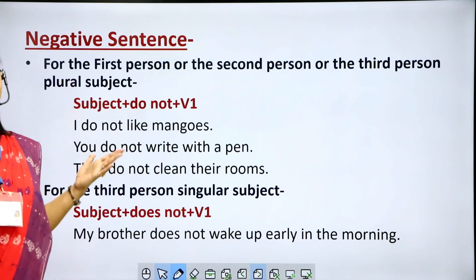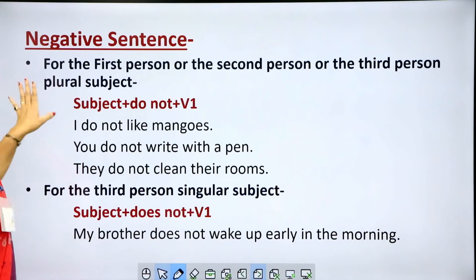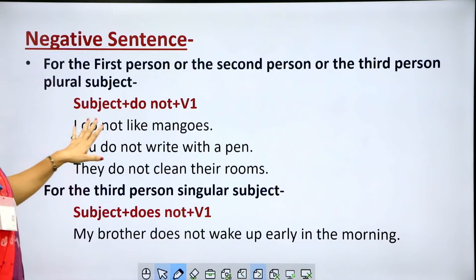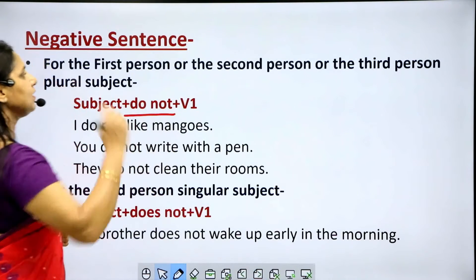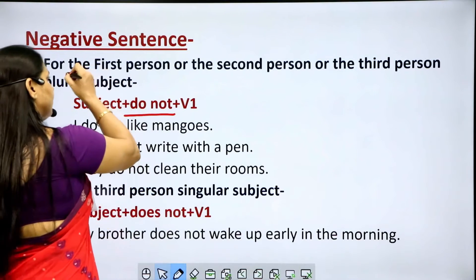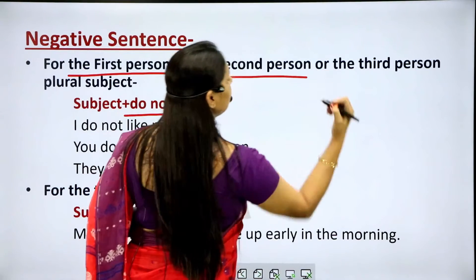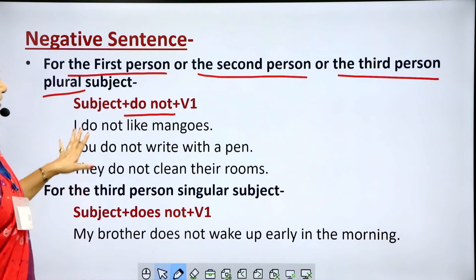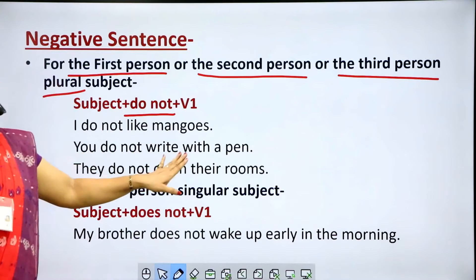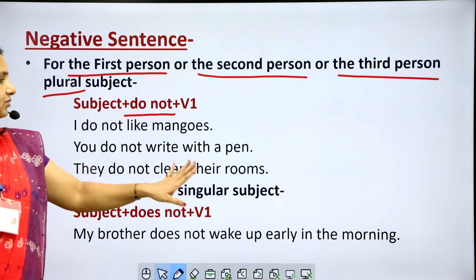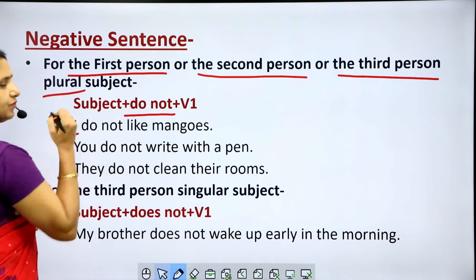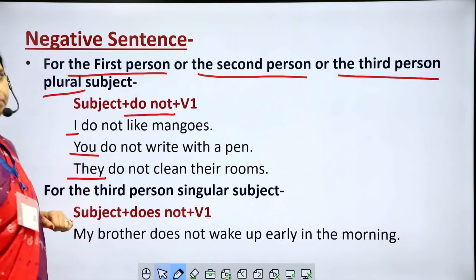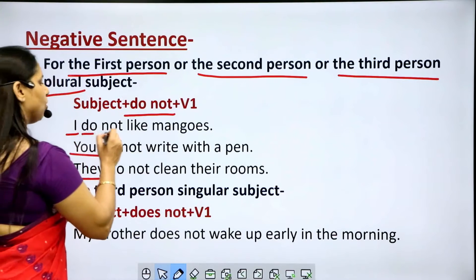How to write negative sentences in simple present tense? For first person, second person, or third person plural subjects, the rule is: subject plus 'do not' plus V1. Examples: 'I do not like mangoes.' 'You do not write with a pen.' 'They do not clean their room.' Here 'I' is first person, 'you' is second person, and 'they' is third person plural — so we use 'do not'.